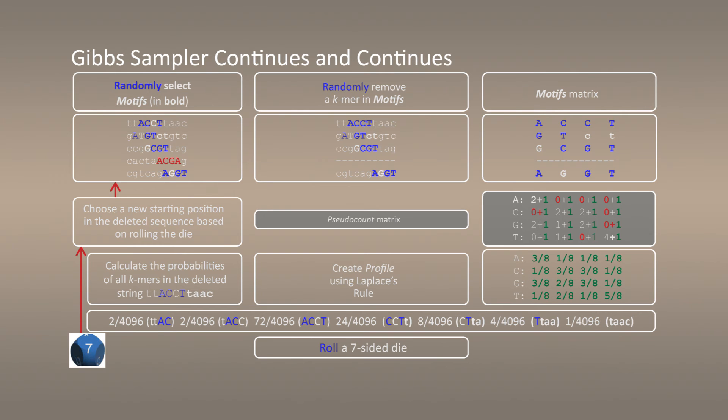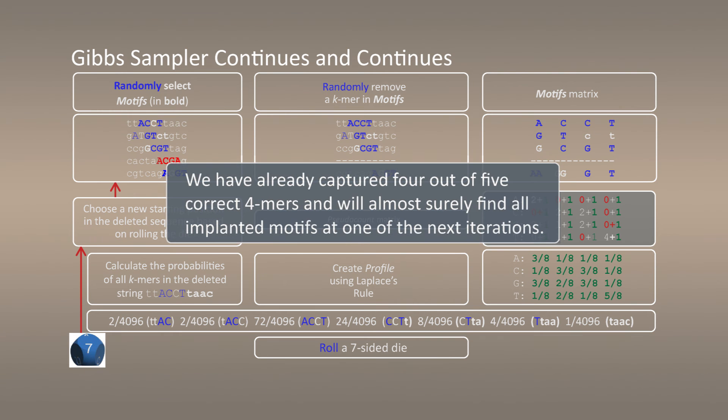We are not still there, because in the second sequence, we have not found the correct motif yet, but surely, at the next iteration, with high probability, we will find it. So, we are almost done.